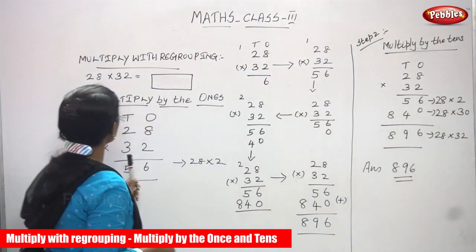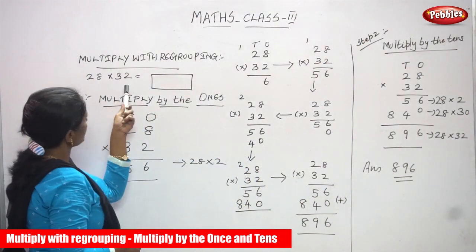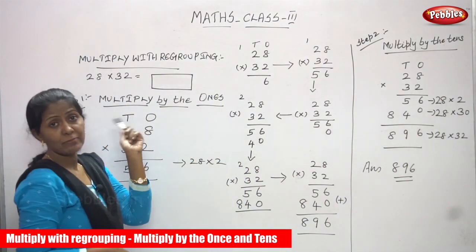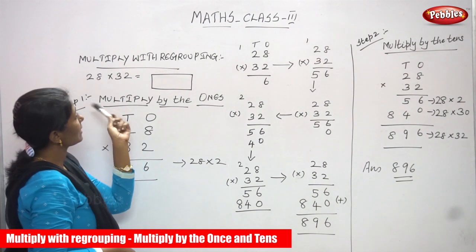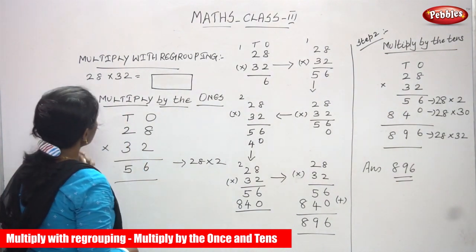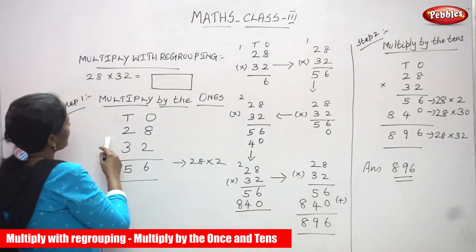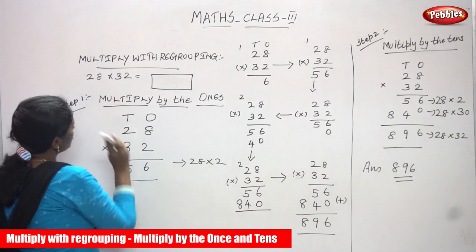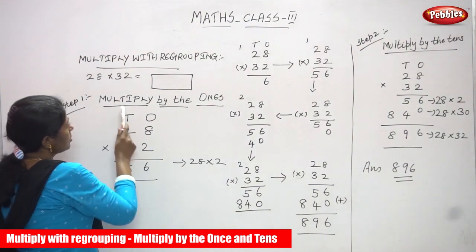Now we are going to see multiply with grouping. Before that we have seen multiplying without grouping. So we are going to multiply again: two-digit number 28 into 32.